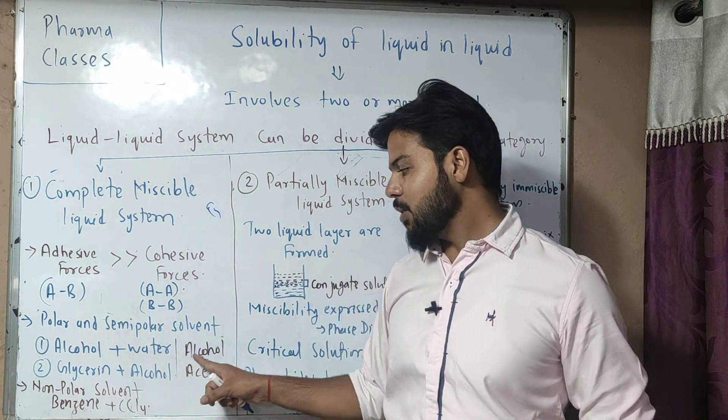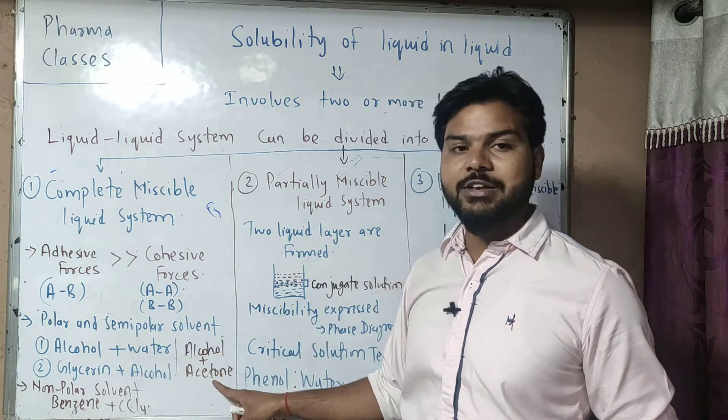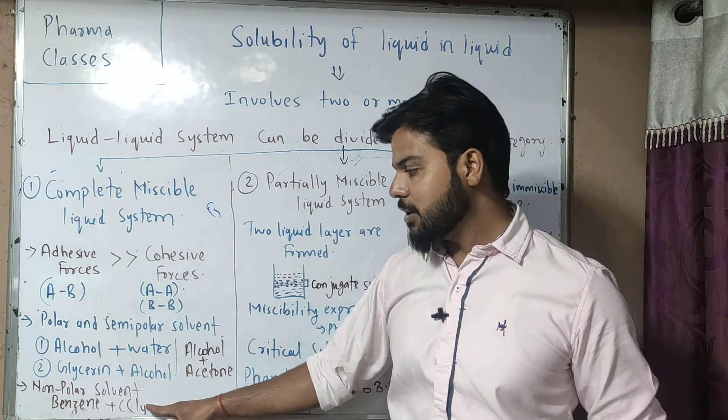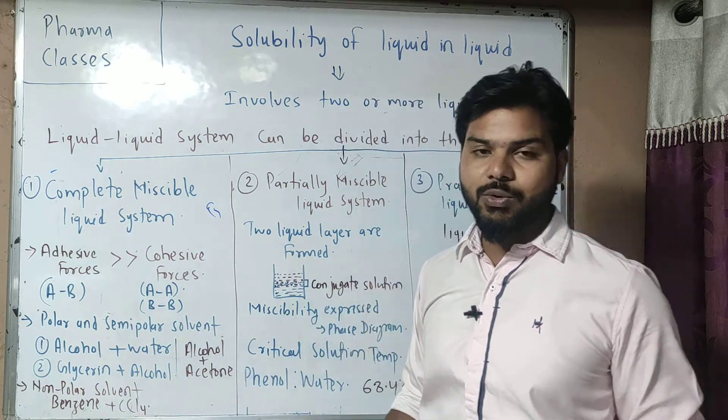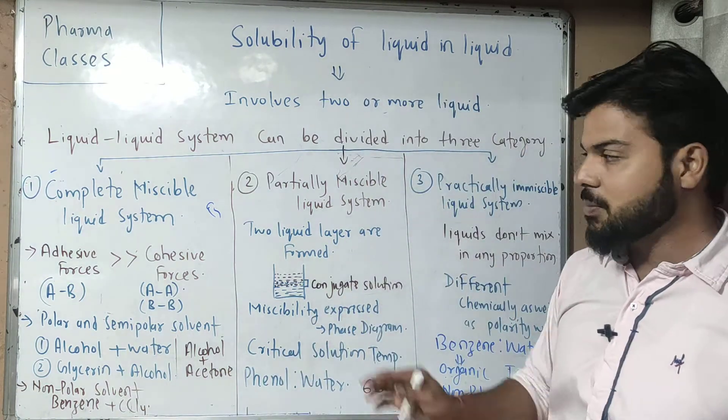Alcohol and water are miscible in all proportions. Similarly, glycerine and alcohol, and alcohol plus acetone are completely miscible. For non-polar solvents, benzene and carbon tetrachloride are completely miscible with each other.